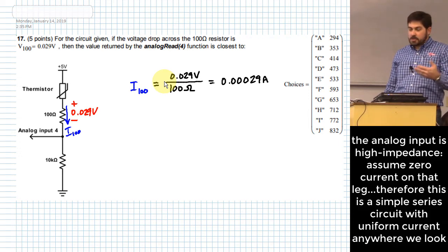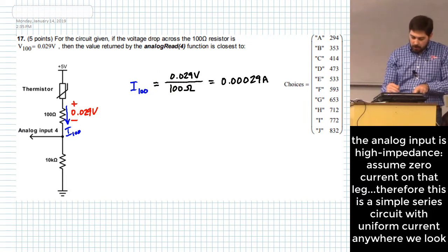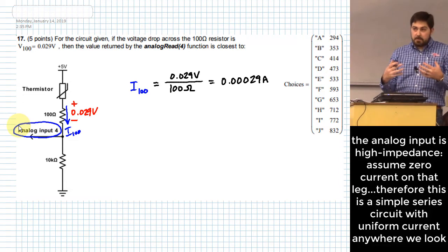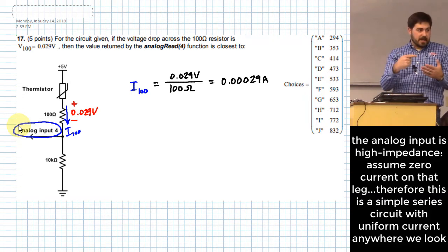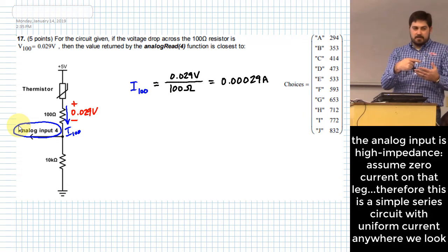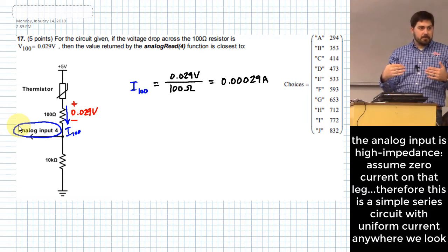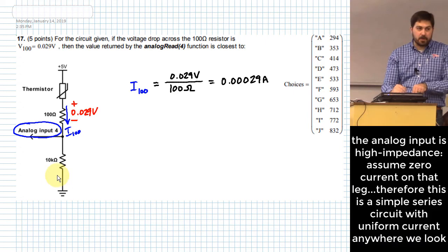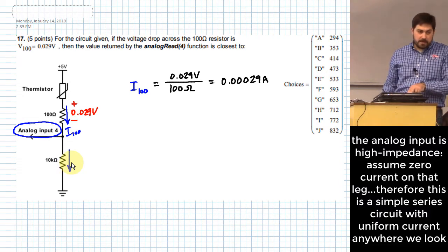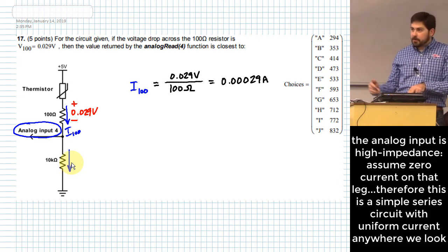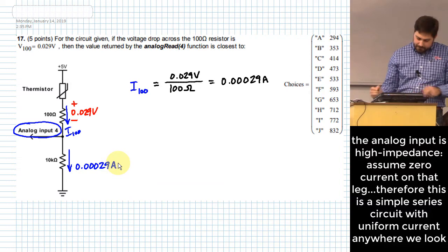This is a series circuit. There's no other place for current to go. In case you haven't seen this before, this analog input is known as a high impedance input. That means effectively it looks like an extremely high resistance in and out of that pin going into the Arduino. If it's extremely high resistance, it's basically zero current. So no current is going in and out there and there's no other place for current to go. That means we now know the current that's flowing through the 10 kiloohm resistor. This will also be that 0.00029 amps.